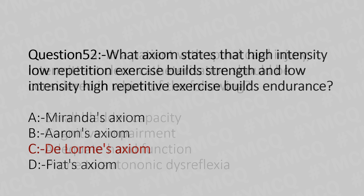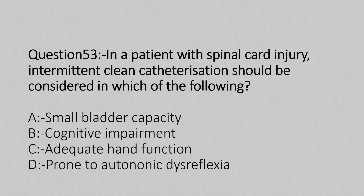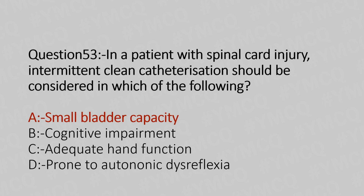Now let's move to question number 53. In a patient with spinal cord injury, intermittent clean catheterization should be considered in which of the following? Option A, small bladder capacity. Option B, cognitive impairment. Option C, adequate hand function. Option D, prone to autonomic dysreflexia. And the answer is Option A, small bladder.